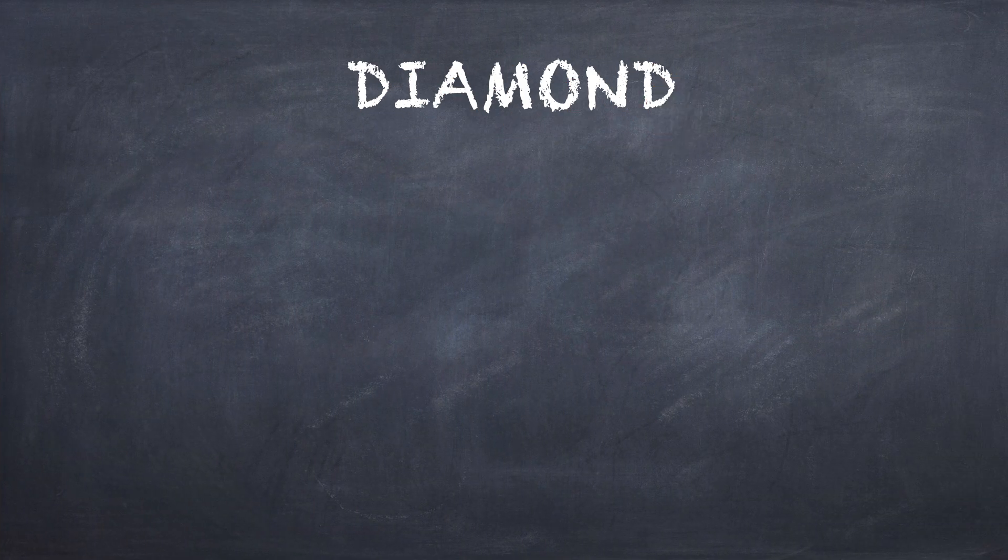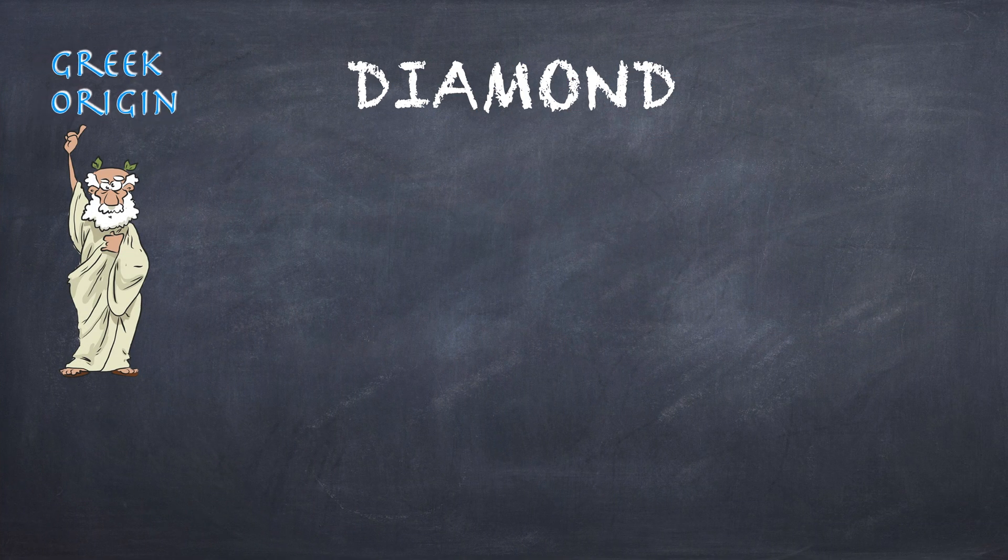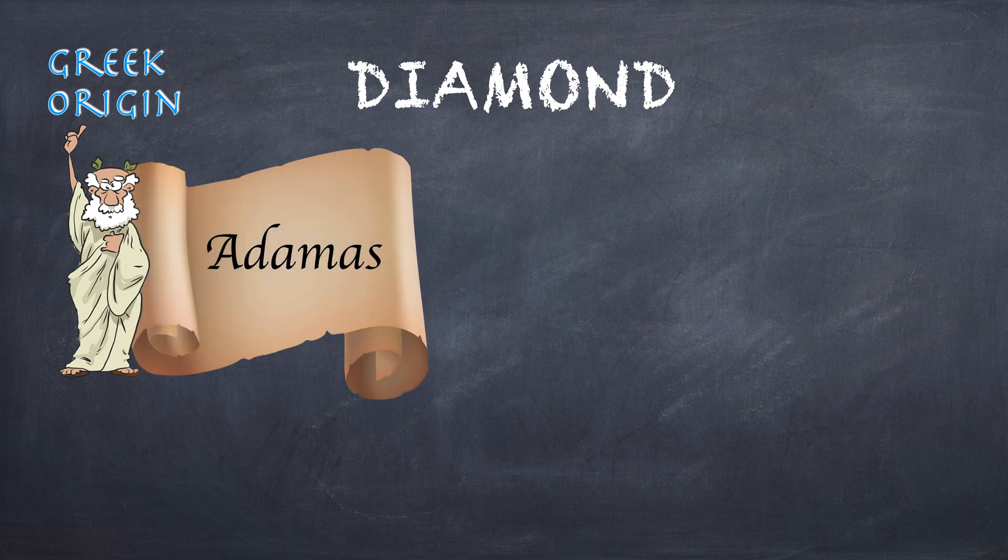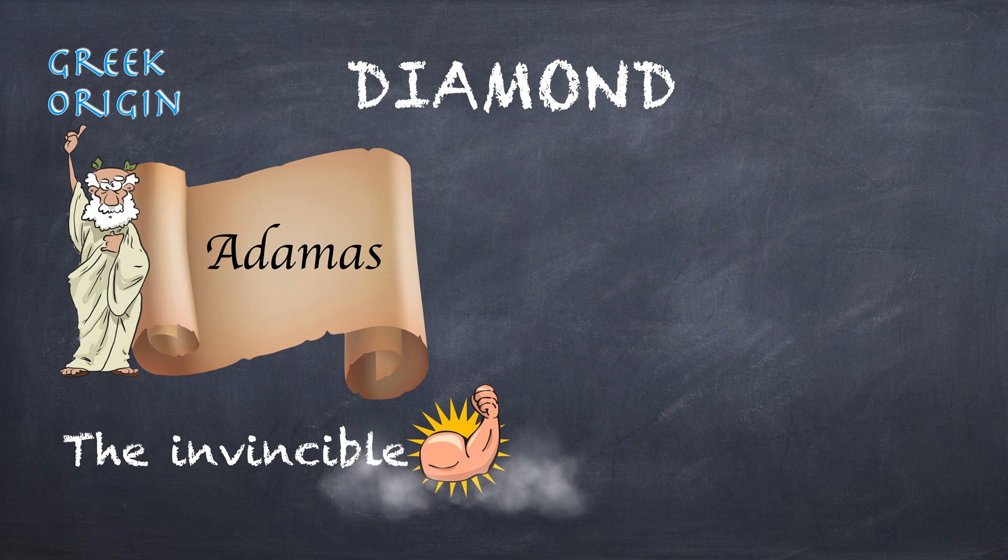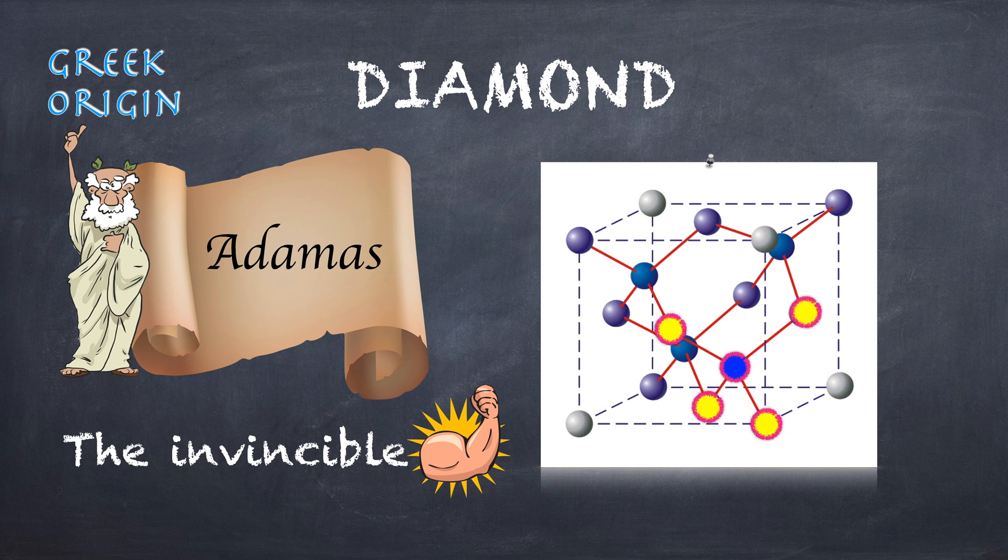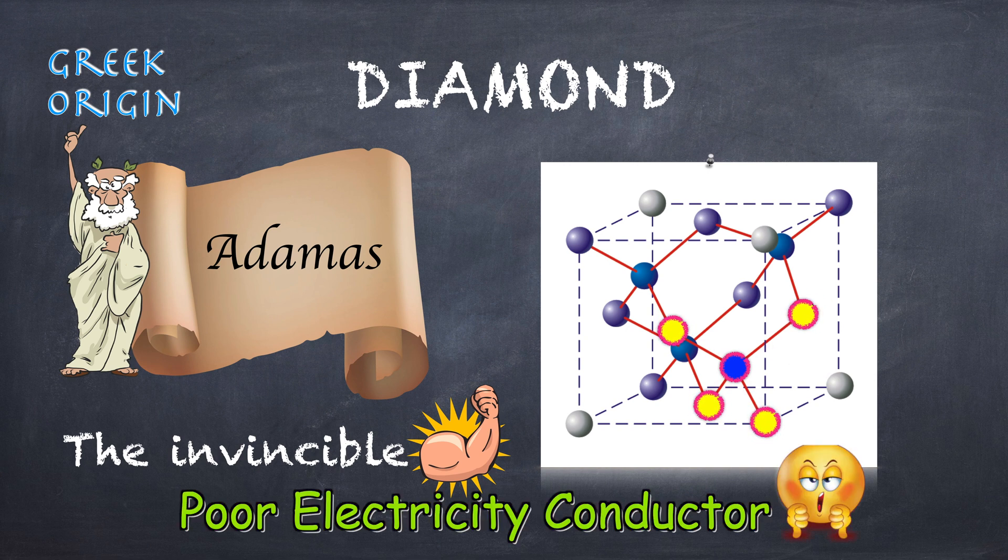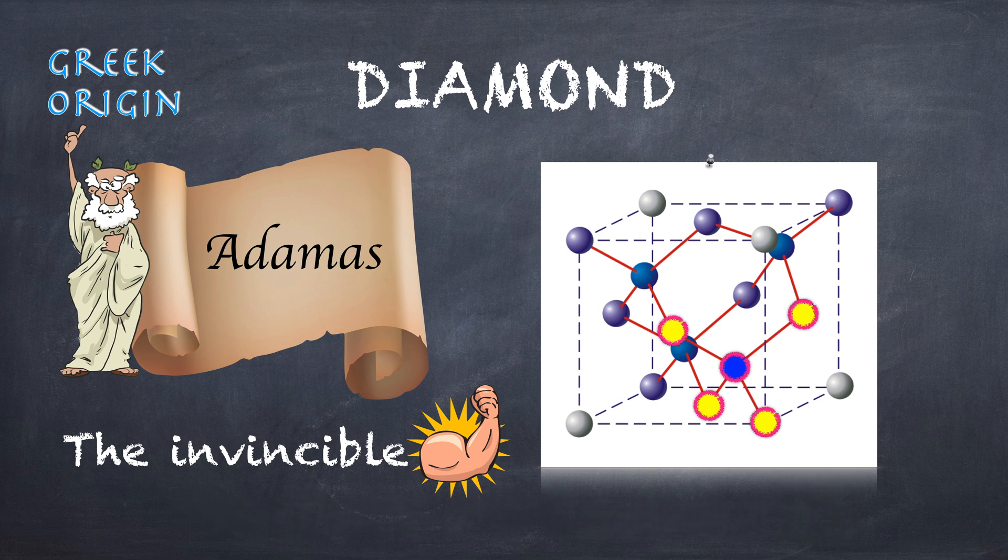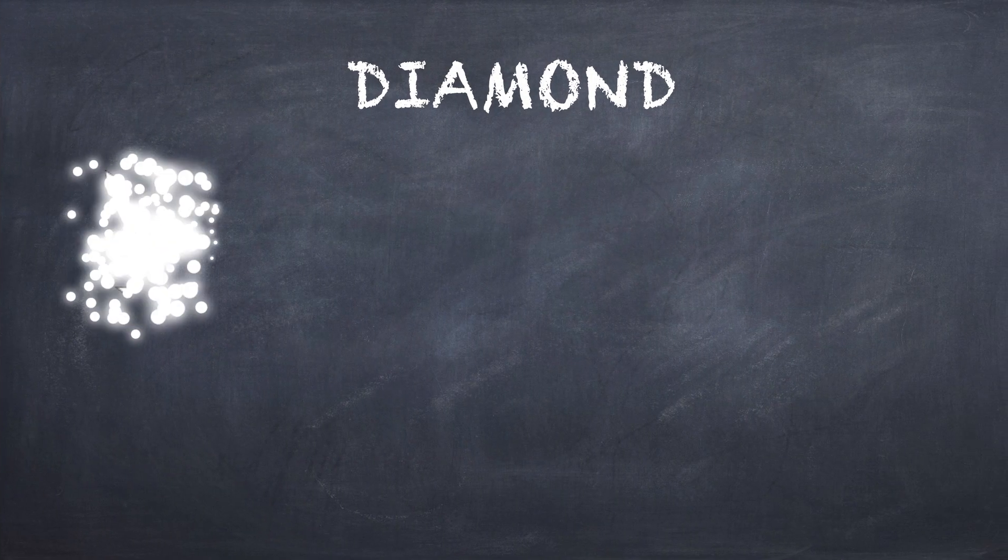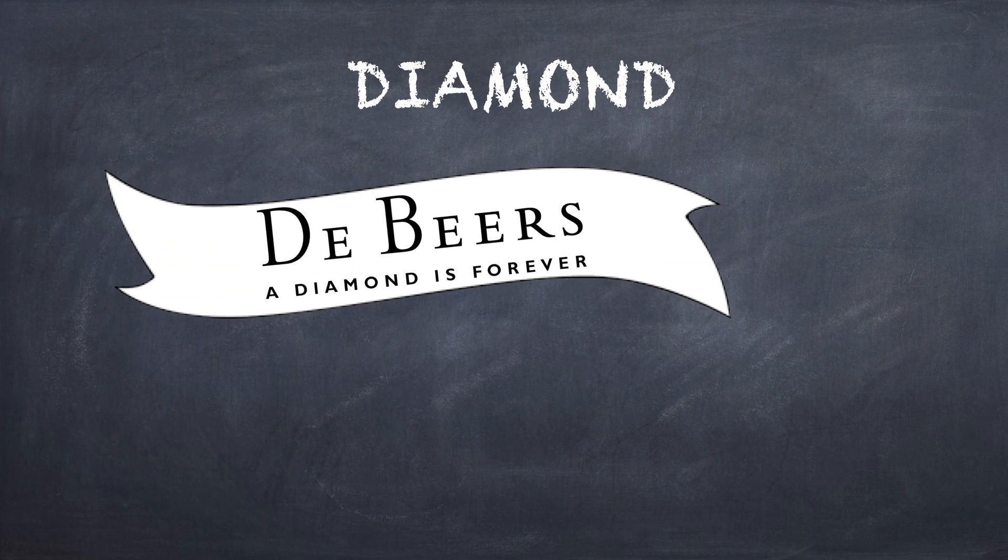The name diamond comes from a corruption of the Greek word Adamus, which means the invincible. In a diamond, each carbon atom is covalently bonded to four other carbons in a three-dimensional array. Diamond is a poor conductor of electricity. Pure diamond is the hardest substance known in nature.